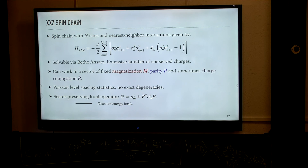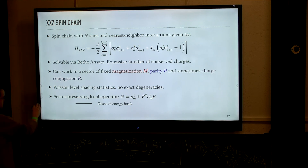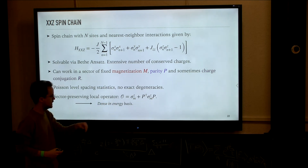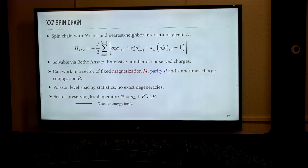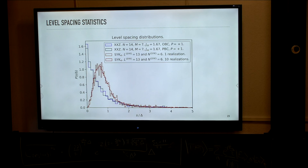The presence of this number of symmetries ensures that the system has Poisson statistics, but there are still no exact degeneracies. We can take a sector-preserving local operator — just some Pauli matrix on a given site, plus its parity conjugate — so that we remain in the same parity sector. We can observe numerically that this is dense in the energy basis.